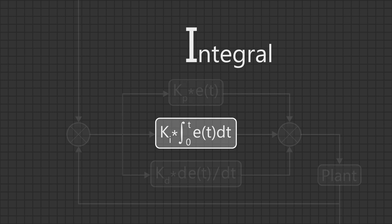The I term stands for integral and helps the robot move closer to the target at the very end of the motion. Sometimes when the robot is closer to the target, the P and D terms don't apply enough power to move the robot, so the I term starts applying more and more power to get the robot a little closer. Since we use PID in so many places in the code, we developed our own PID class so we only need to make a new PID object every time we want a new PID controller.